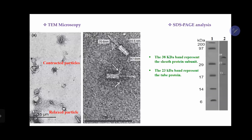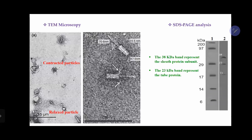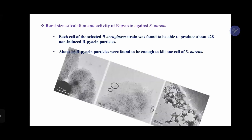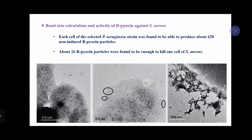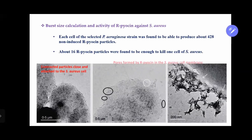When we calculated the burst size for pyocin production, we found that each cell of Pseudomonas aeruginosa strain can produce about 428 non-induced R-pyocin particles. And each cell of Staphylococcus aureus could be killed by 16 R-pyocin particles. In the picture, we see the transmission electron microscopic examination of S. aureus treated with R-pyocin. We see contracted R-pyocin particles close to and attached to the S. aureus membrane, and we see pores formed in the S. aureus membrane as a result of R-pyocin treatment.